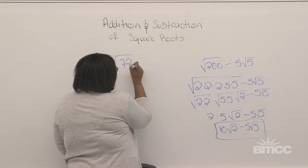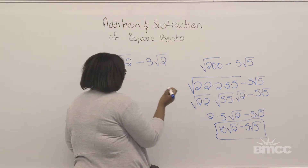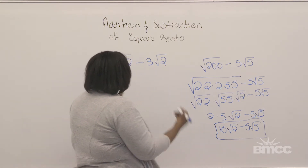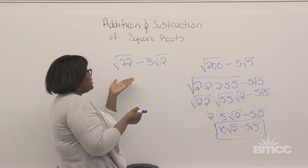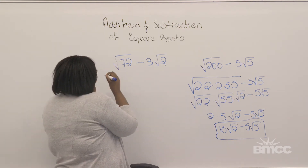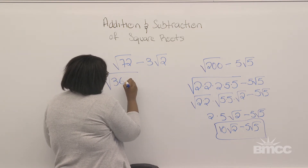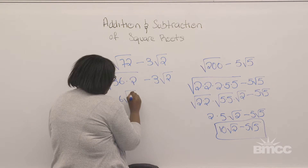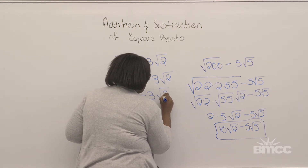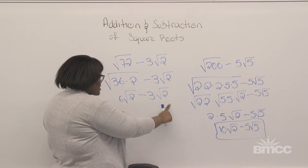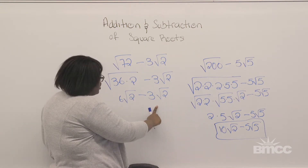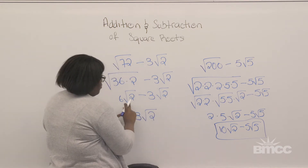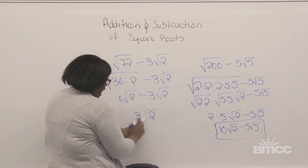If we were to have the square root of 72 minus 3 radical 2 — these are not the same number, but we can simplify 72. Using the perfect square factor: the largest perfect square factor of 72 is 36, so we get the square root of 36 times 2, minus 3 radical 2. Simplifying gives us 6 radical 2 minus 3 radical 2. Both expressions have radical 2, so we subtract the coefficients: 6 minus 3 gives us 3 radical 2. We don't subtract the radical — we just place it back at the end.